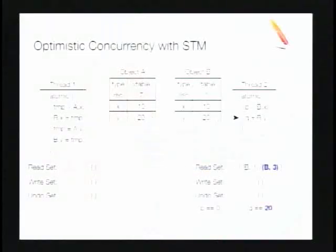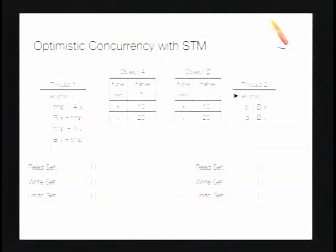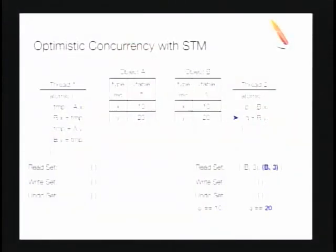Now thread 2 picks up. It reads B.y, appending B and its version number to the read set, and reads value 20. When it tries to commit, we have an inconsistent pair (0 and 20), which is not a valid result. When it validates its read set, it sees it has entry (B, 1), but B no longer has version number 1. So it must abort. In this case, it restarts the transaction, re-executes, builds up a new read set with no conflicts, the read set validates, and we commit with values 10 and 20.